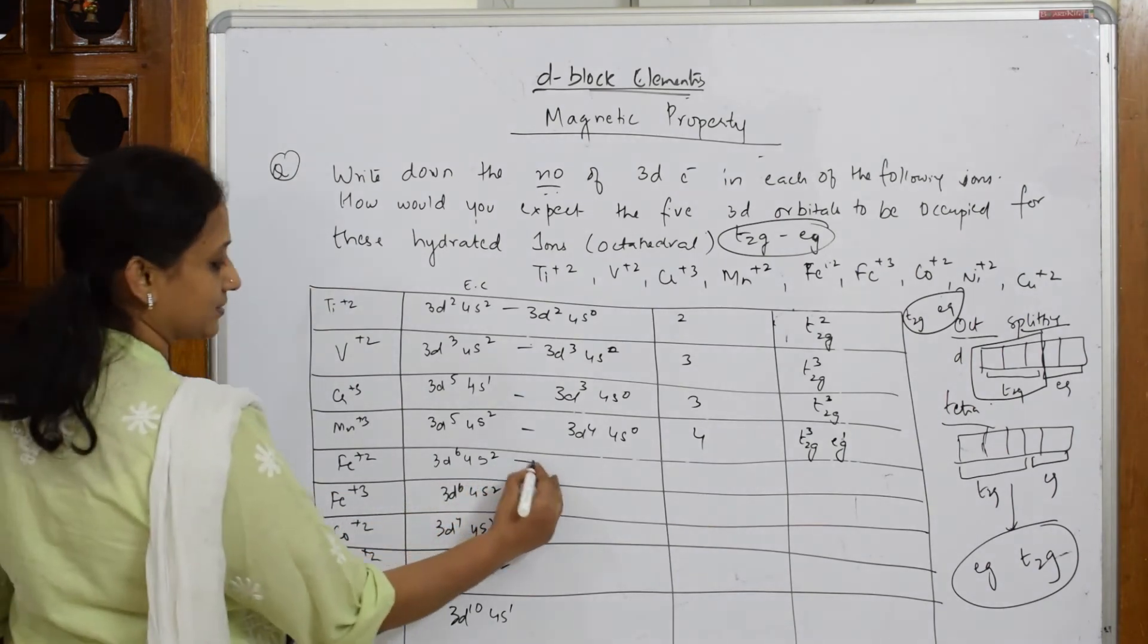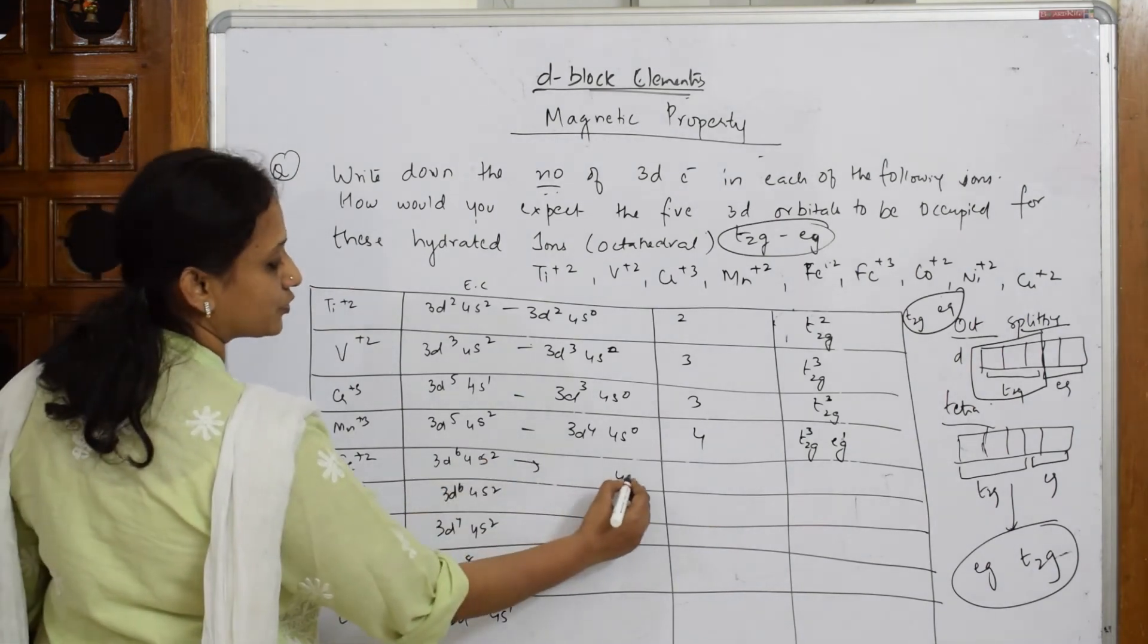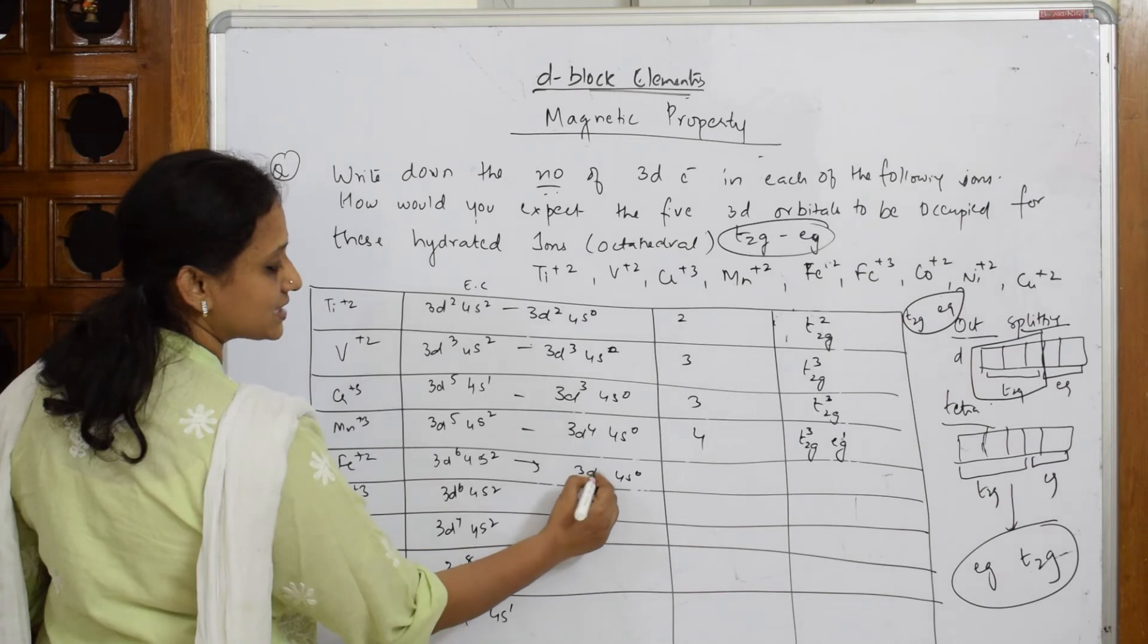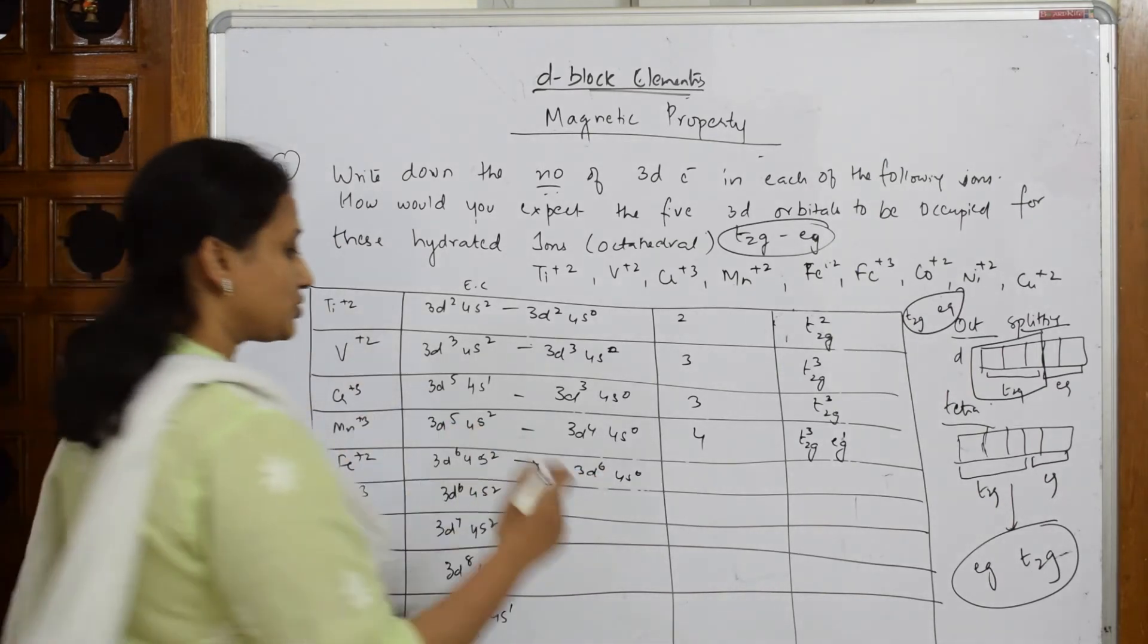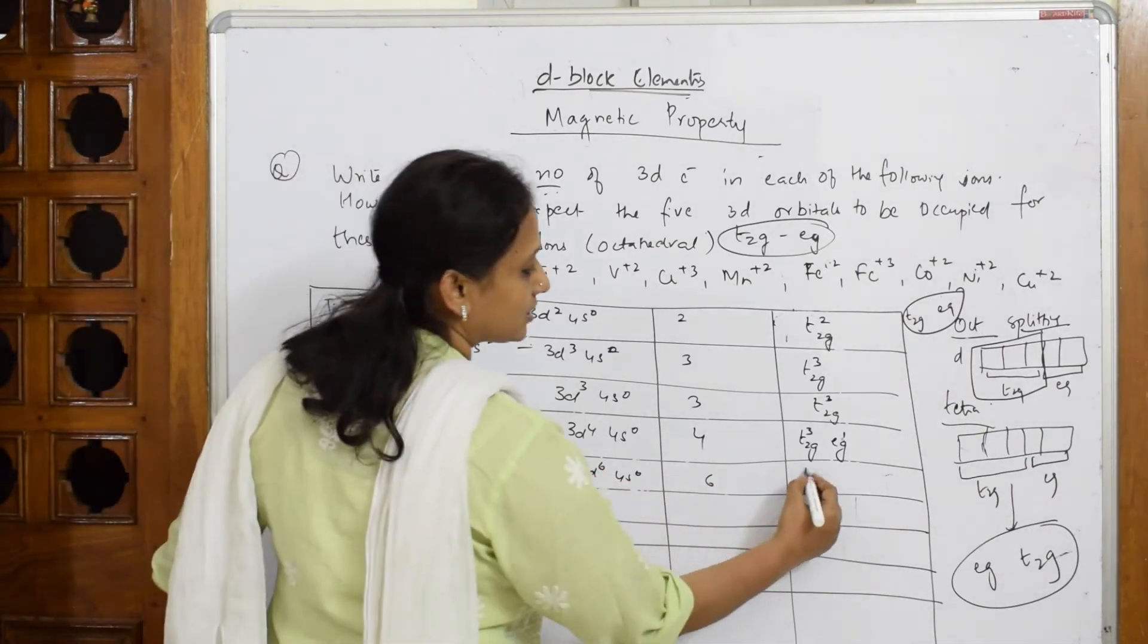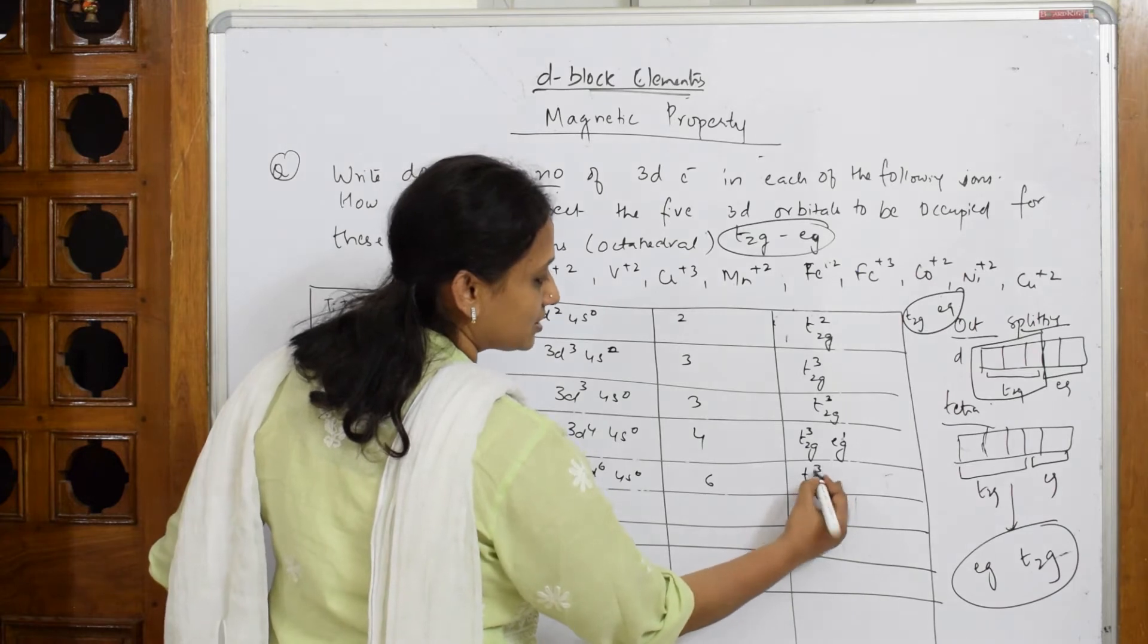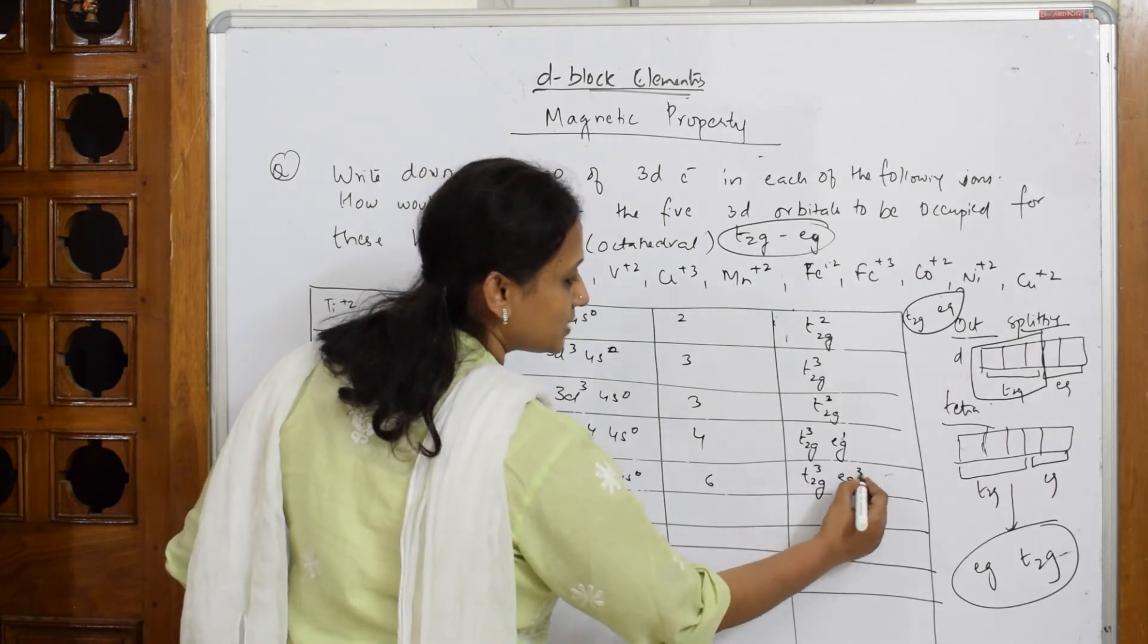Let us do for this. Iron. 4S². So 4S⁰. This becomes 3D⁶. How many unpaired electrons you have? 6. Fill in. T2G will always be 3. EG will always be 3.